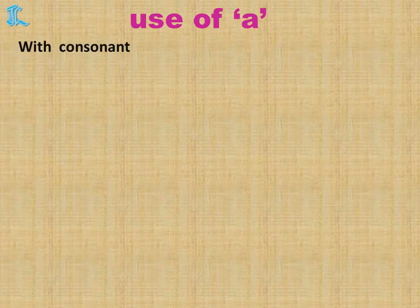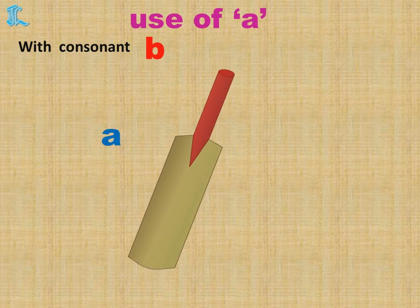Let's see a few examples. Now with consonant B. What is this? Bat. B is a consonant sound, so we say: A Bat.